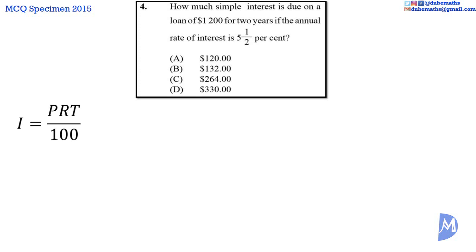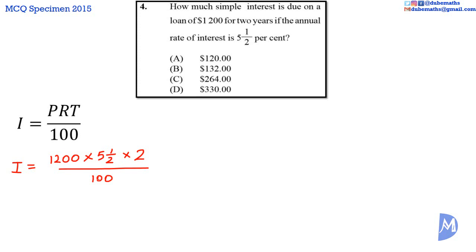Thus the simple interest here: I is equal to the principal $1,200 multiplied by the rate 5.5%, multiplied by the time 2 years, all over 100. Canceling 100 into 100 gives 1, and 100 into 1,200 gives 12. Multiplying out: 5.5 multiplied by 2 is 11, and 11 multiplied by 12 is 132.